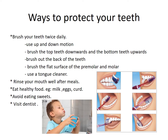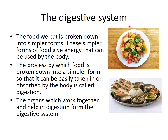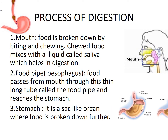Now coming to the digestive system. The process by which food is broken down into a simpler form so that it can be absorbed by the body is called digestion. The organs which work together and help in digestion form the digestive system. The process of digestion starts in the mouth.